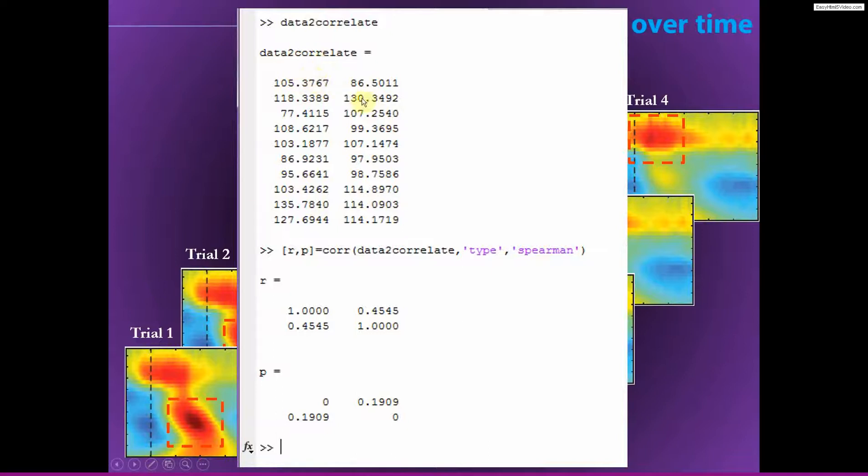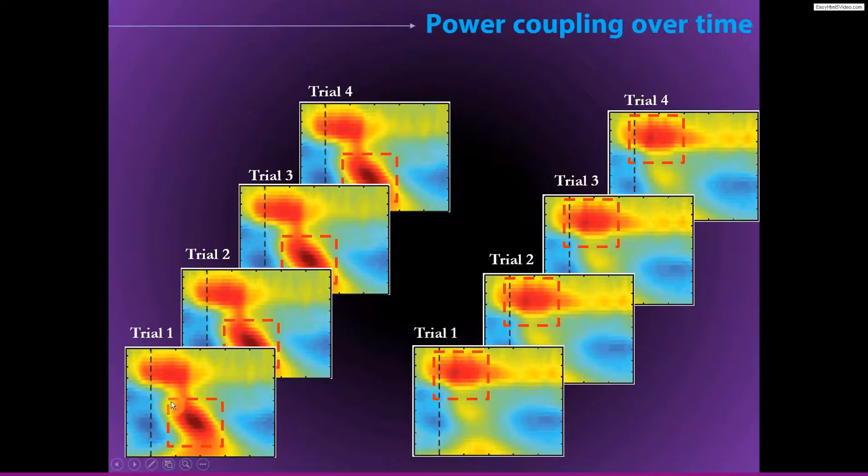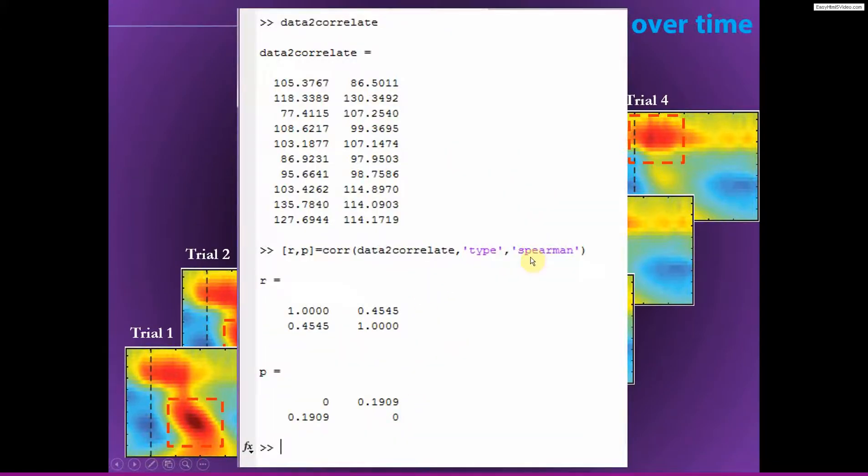And the result of this procedure is something like this, data to correlate. So now we have two columns of data. This would be from FZ, and this would be from OZ. And the numbers here reflect, each row is a trial. So this is trial one, trial two, trial three. And the number here is the average power in this time-frequency window of trial one, trial two, and so on. And then you just correlate these, and you see if, presumably you have a hypothesis about a significant correlation, which in this case there isn't.